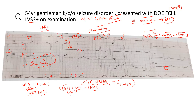Essentially it is like the entire conduction system is diseased. You have the right bundle, the anterior fascicle, the posterior fascicle, and the AV node. The AV node is diseased, the anterior fascicle is diseased, the right bundle is diseased. The only thing left for conduction is the posterior fascicle. This is the severity of the block that is there.